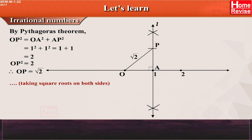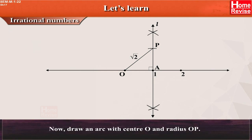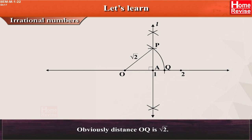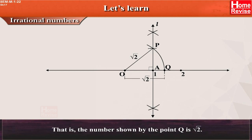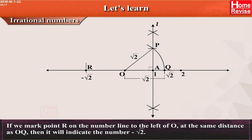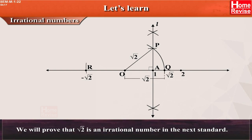Taking square roots on both sides, OP equals root 2. Now, draw an arc with center O and radius OP. Name the point Q where the arc intersects the number line. Obviously, distance OQ is root 2 — that is, the number shown by point Q is root 2. If we mark point R on the number line to the left of O at the same distance as OQ, then it will indicate the number minus root 2. We will prove that root 2 is an irrational number in the next standard.